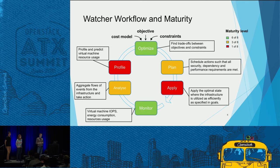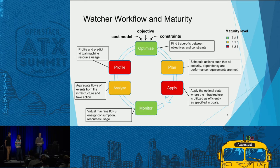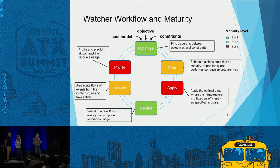This is a continual loop. Sometimes people have the notion of the staples button — you press it and everything is perfect. That's not the case. Clouds are very dynamic in nature, so things are never going to be perfect. You need to continually evaluate this in a loop. After this loop runs, things are better than they were before, but you're going to need to continue to do this over and over again.